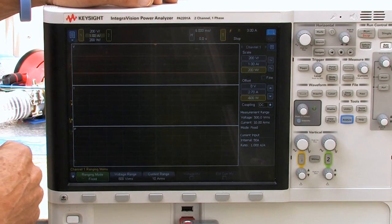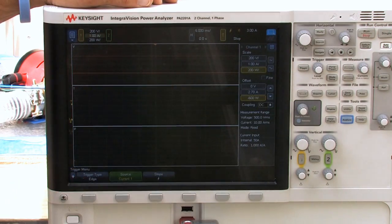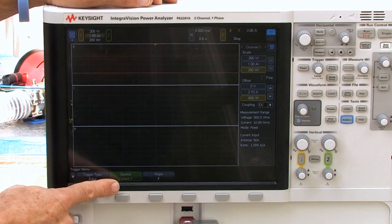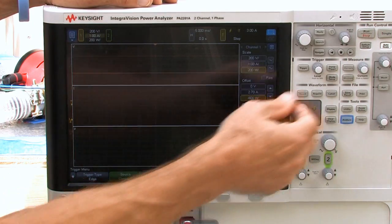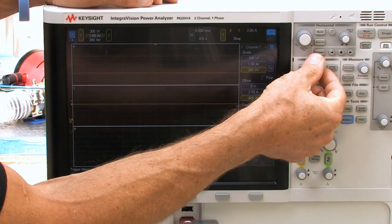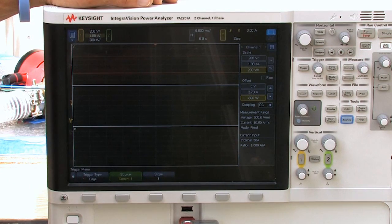Next thing I want to do is look at triggering because we're going to be triggering on that current spike. So push trigger and make sure that we have current as a source, so yes, current channel one is that source. We'll play around with the trigger level and see that it's significantly above zero, and there we are at three amps, so we should be triggering on three amps. So I think we're set up well.